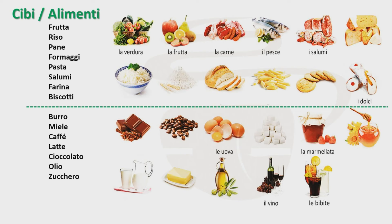Poi la foto seguente, anche qui abbiamo bisogno di un nome plurale. Quindi nella lista cosa rimane? Formaggi e biscotti. Si tratta dei formaggi. La foto che segue è la foto del riso. Poi abbiamo bisogno di una parola al femminile: la farina. Poi il pane e la pasta. E l'ultima parola che rimane nella lista: i biscotti.